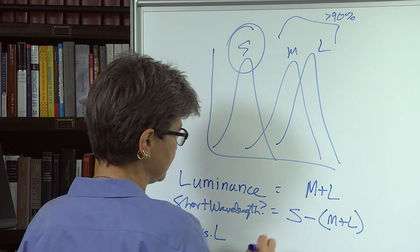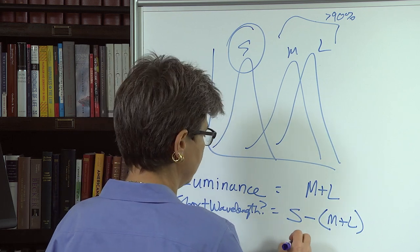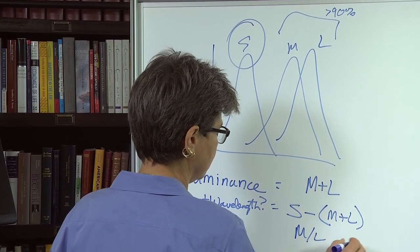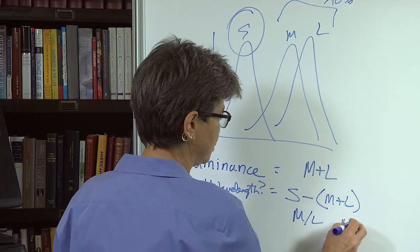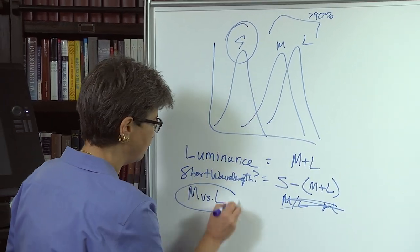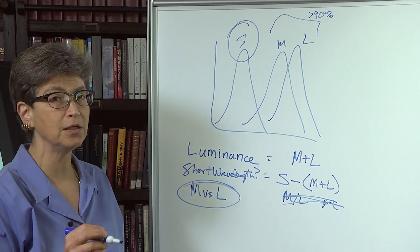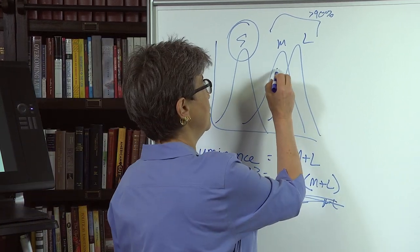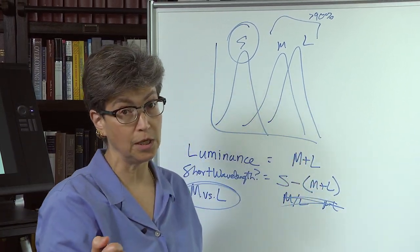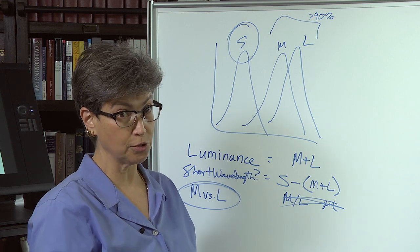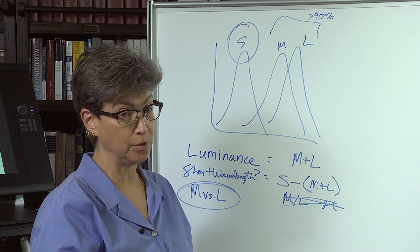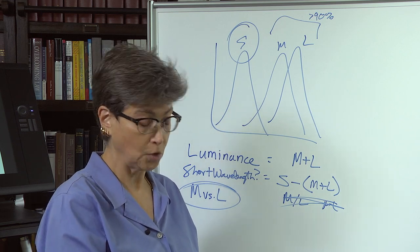And M versus L, you can think of this as M divided by L or M minus, whichever this is. It doesn't matter. It's M versus L. So M versus L is going to tell you, basically is going to tell you under normal circumstances whether that apple is ready to eat or not.